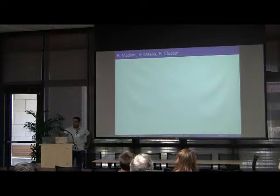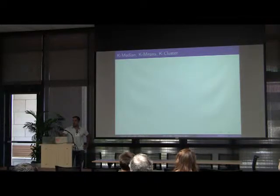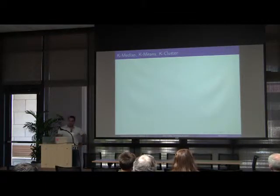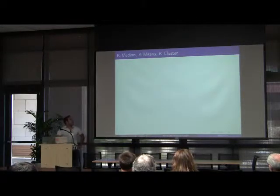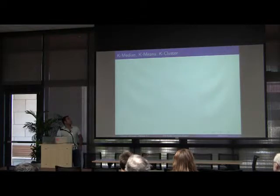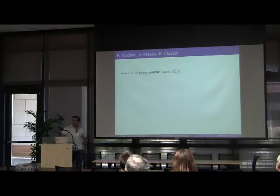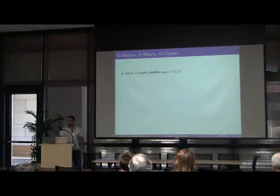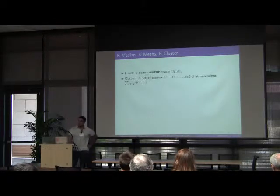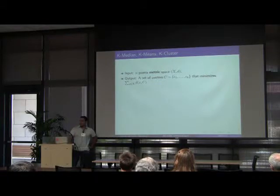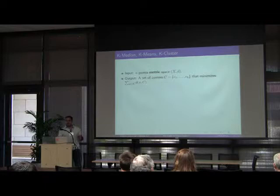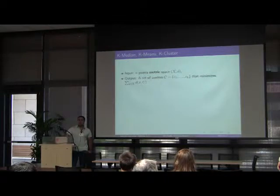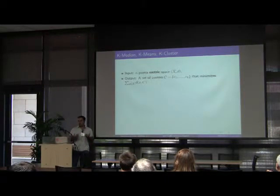We will start with a result about k-medians, k-means and k-clusters and other center-based clustering problems. We will focus on k-medians for simplicity but similar results also for k-means. Here the input is an n-point metric space xd. And I emphasize that now we do assume that d is a metric. The output is a set of centers, a set of k centers, c1 to ck, that might be in x and might be in some ambient space, that minimizes the sum of distances between each point in x to each center, where the center of a point is the point in c that is closest to this point.